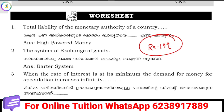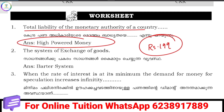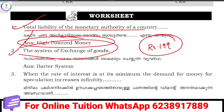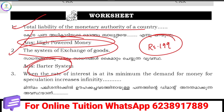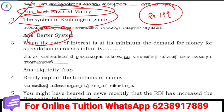The total liability of the monetary authority — in a country's monetary authority, we call it high-powered money. It is a barter system. If the rate of interest is infinite, there is infinite demand for money.